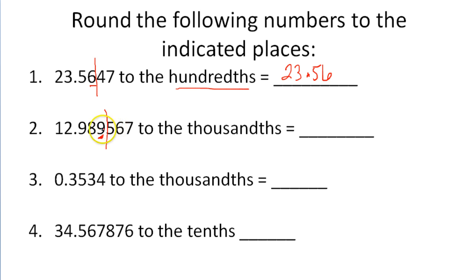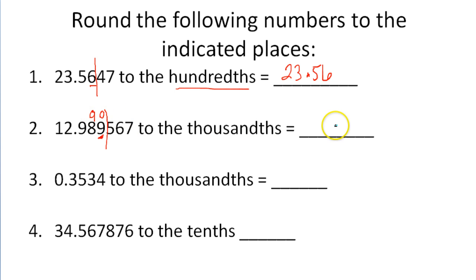So what we need to do is look one past the thousandths place to the ten-thousandths place. If it's 5 or higher, I'm going to have to raise this. In the ten-thousandths place, we have a 5 or higher. I will have to raise this to a 0 here, and I will ultimately have to change this to a 9. So if I round this number to the thousandths place, I will end up with 12.990.